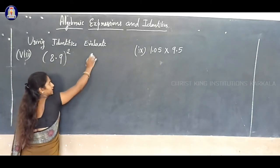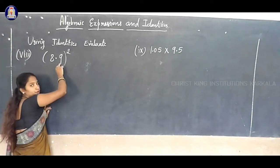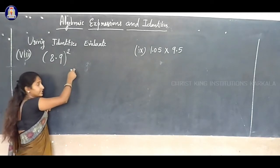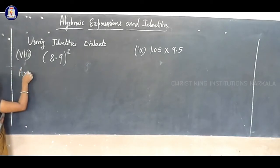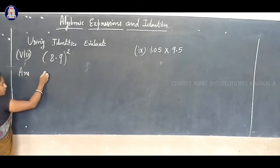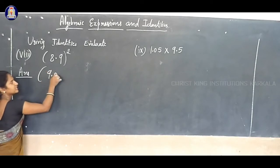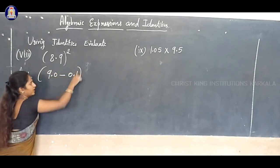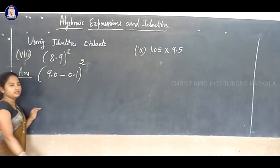Correct? 8.9 - if you add 0.1, you get 9. So, 8.9 can be written as 9.0 minus 0.1, the whole square. Clear?